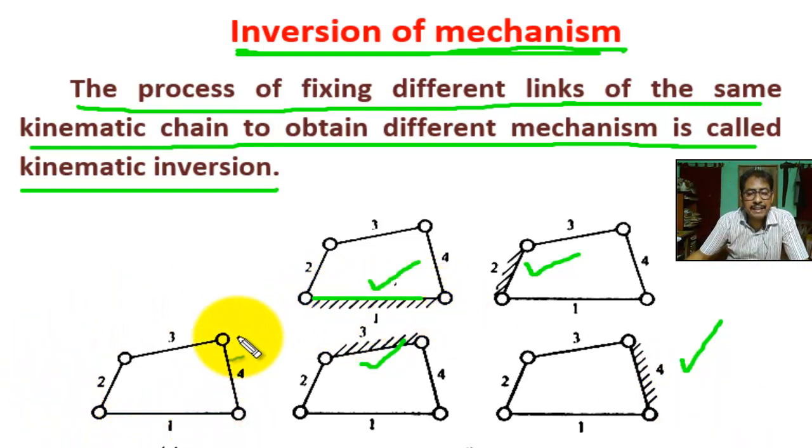This is the simplest kinematic chain. There are four links and four kinematic pairs. Here, four dissimilar mechanisms can be obtained by four different inversions of the chain.